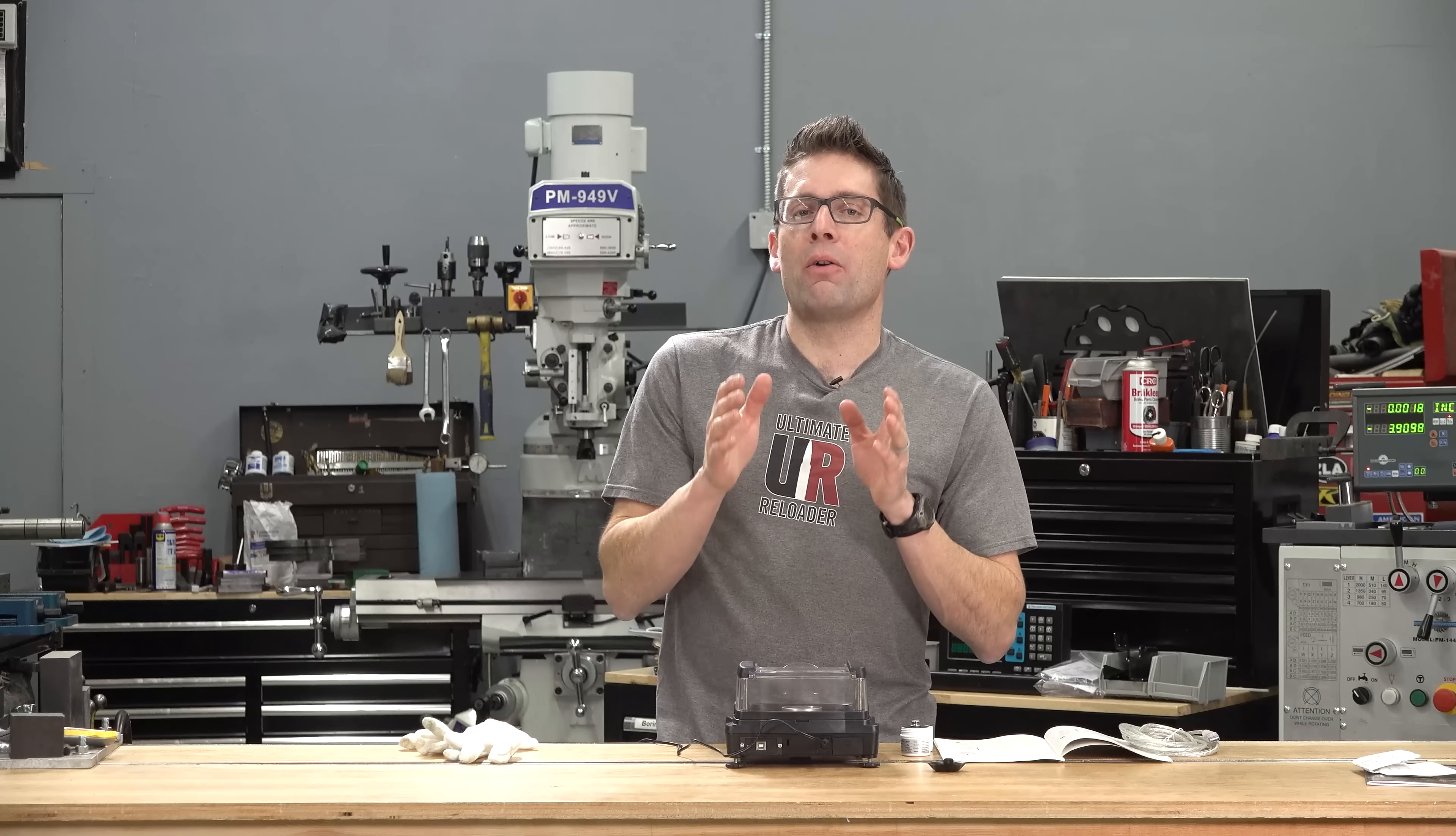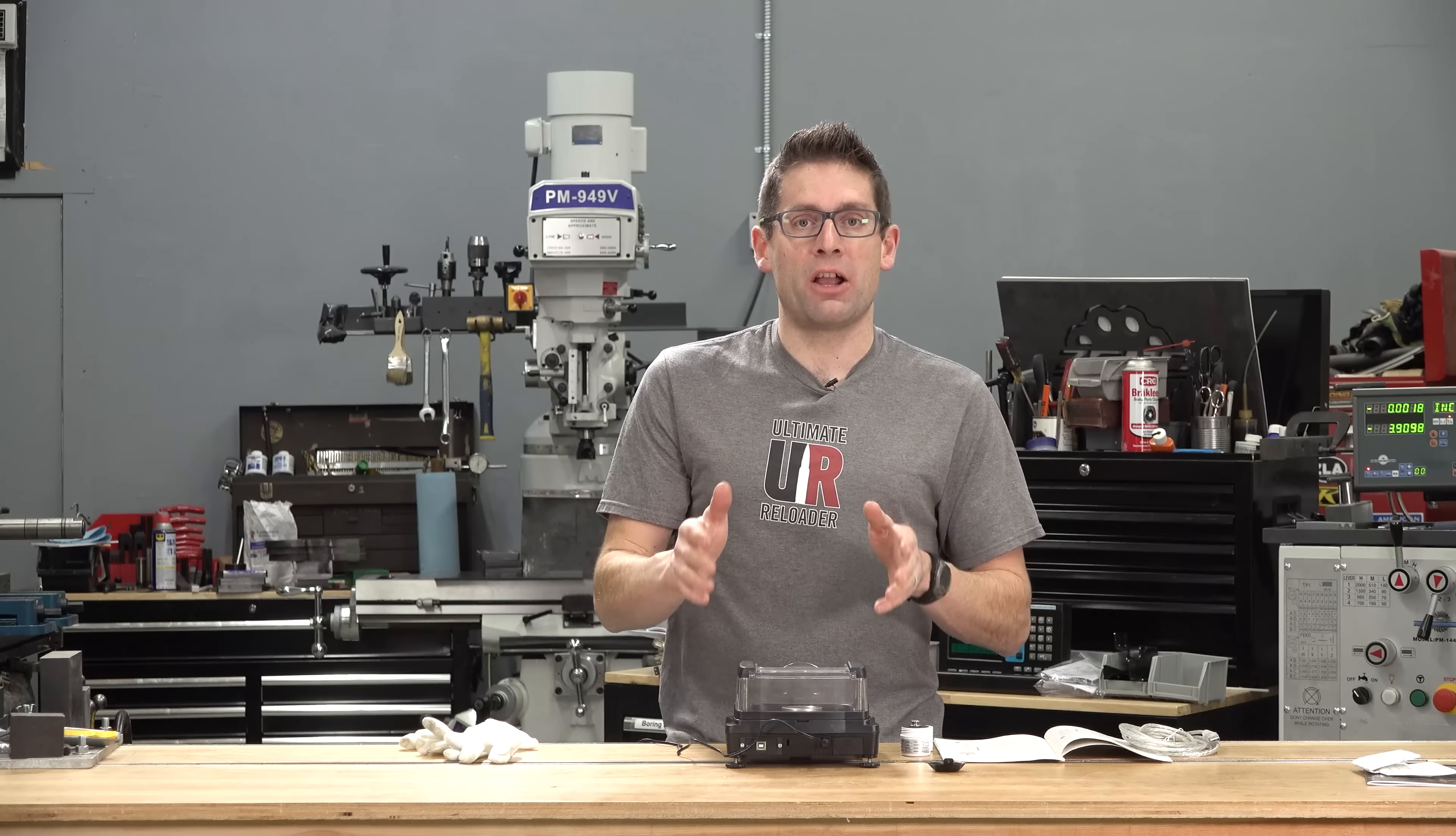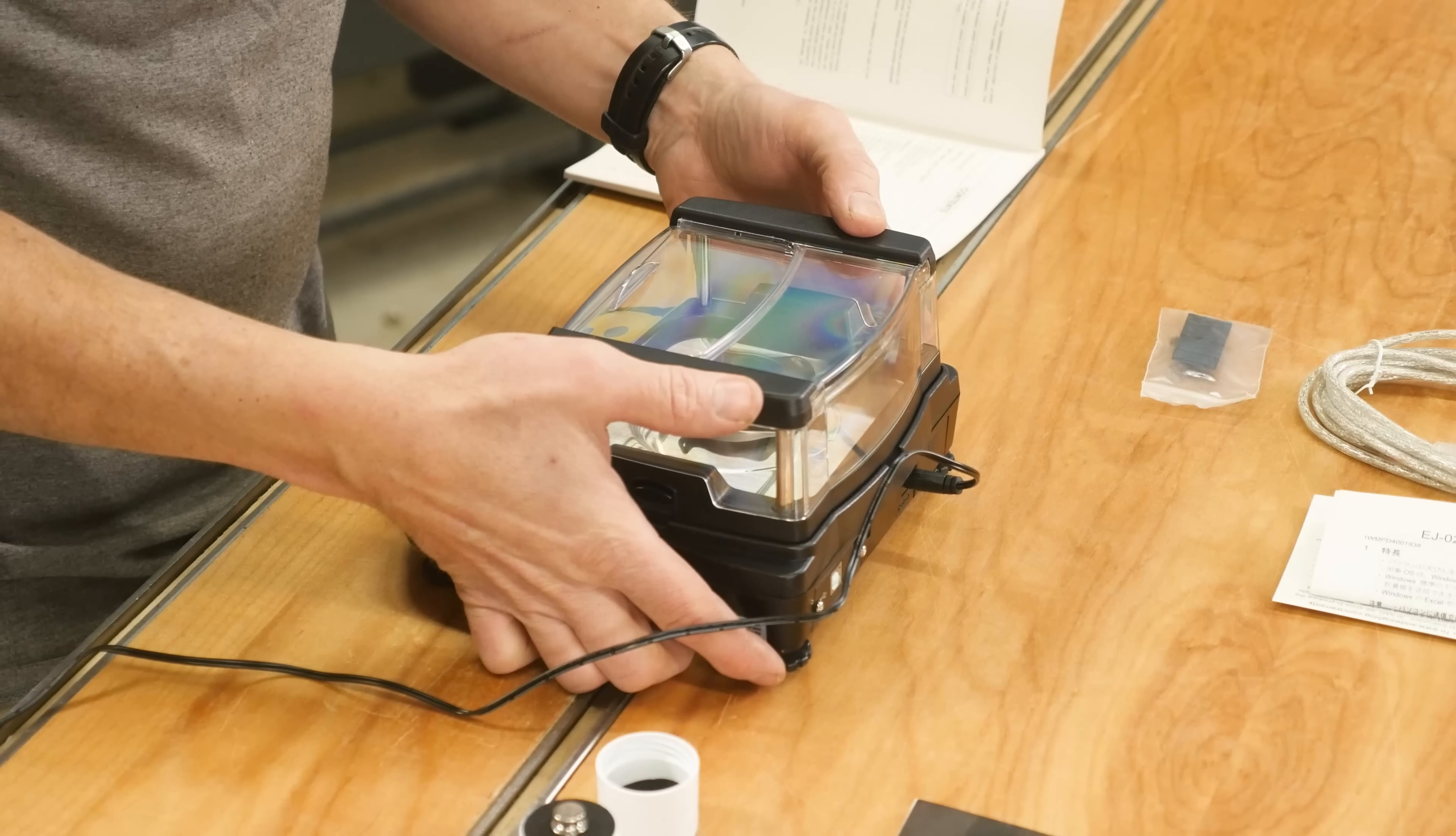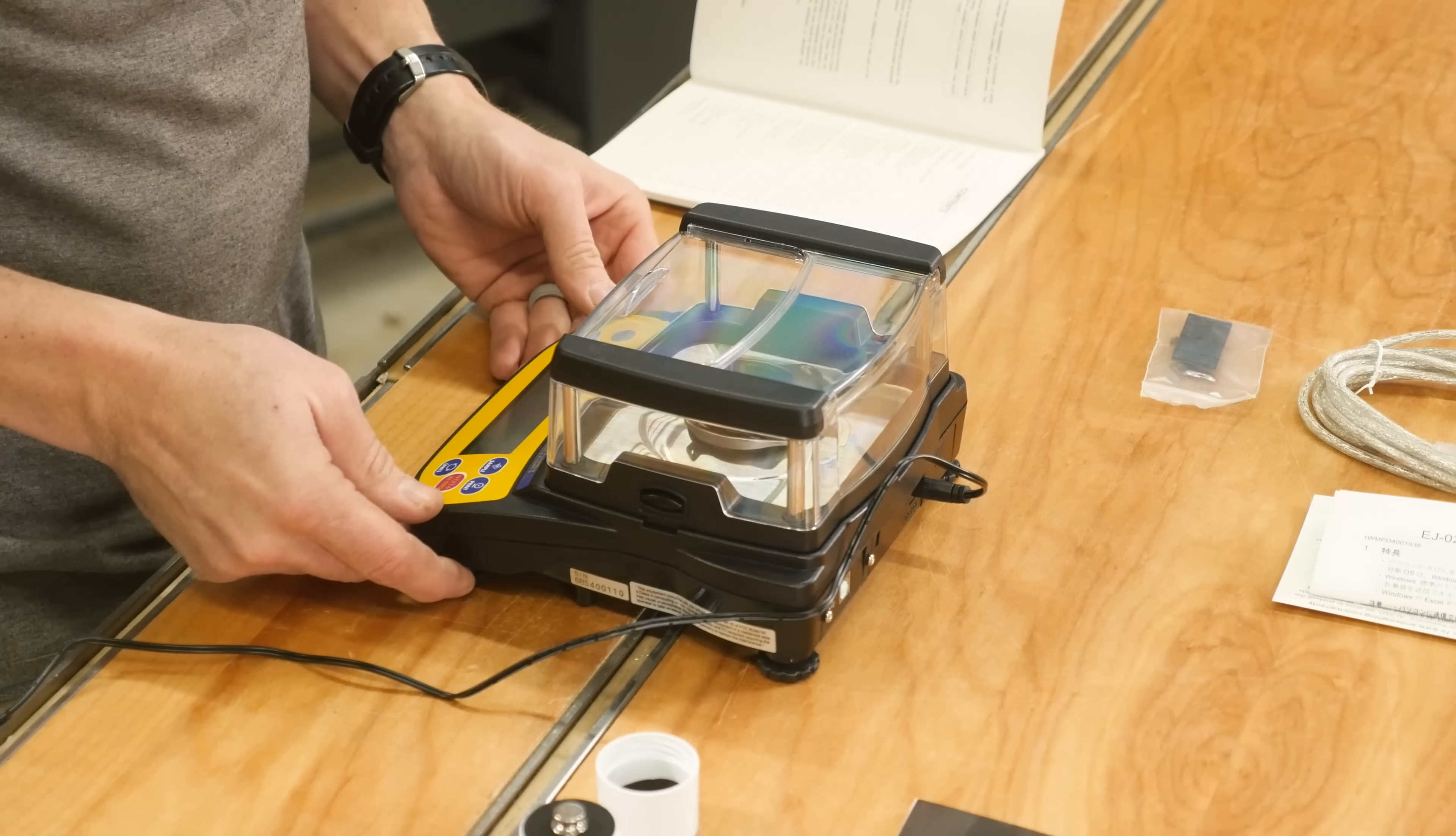I've had this scale powered up for well over an hour now, and that means I'm extra sure that this scale is up to temperature. It's running at steady state, and I should be good to go to calibrate now. One additional note, after the initial setup steps that I walked you through, I also adjusted all four feet. They're independently adjustable, and that allows you to use the integral bubble level to get the scale perfectly level.